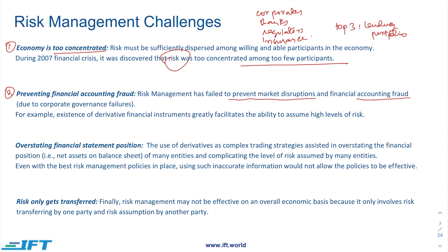Despite Basel 2, there were issues with the banking sector and a number of accounting frauds. The existence of derivative financial instruments greatly facilitates the ability to assume high levels of risk. Corporates create SPVs, invest in the derivative market, and try to cover up losses and not represent the actual losses in their financial books, which prevents effective risk management.